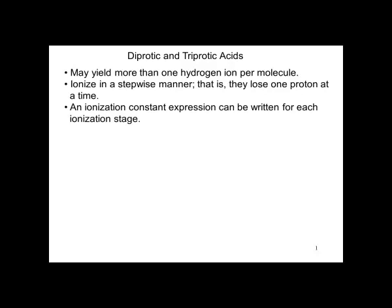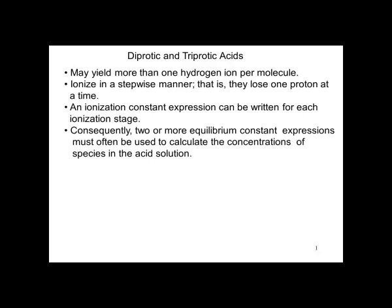An ionization constant expression can be written for each ionization stage. Consequently, two or more equilibrium constant expressions must often be used to calculate the concentration of the species in acid solution.